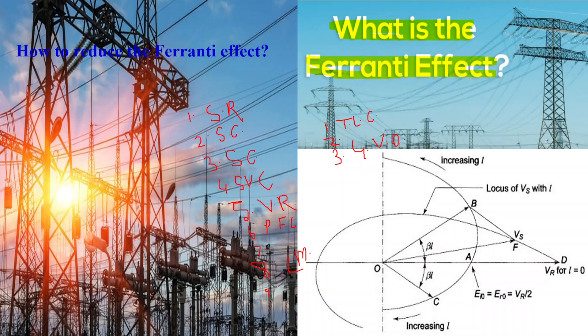Tenth, system monitoring and control. Implementing advanced monitoring and control systems enables real-time monitoring of voltage levels and reactive power flow along the transmission line. This allows operators to take proactive measures to mitigate the Ferranti effect and maintain system stability. By employing a combination of reactive power compensation, voltage regulation, and advanced control strategies, power utilities can effectively reduce the impact of the Ferranti effect and ensure the reliable and efficient operation of long high voltage transmission lines.